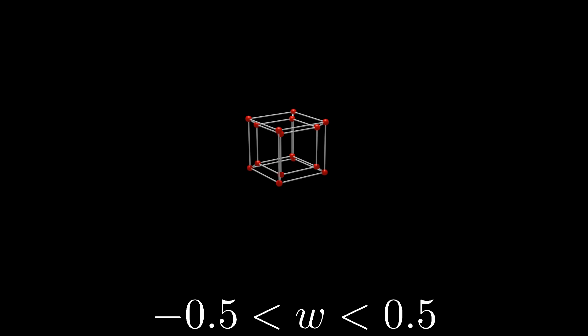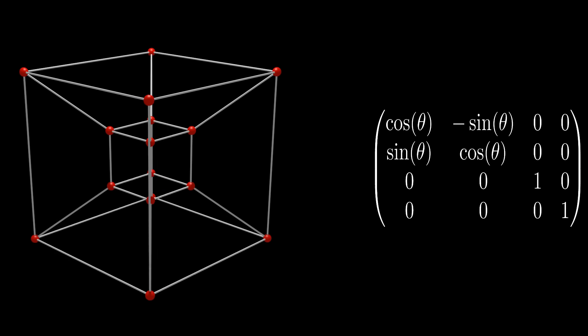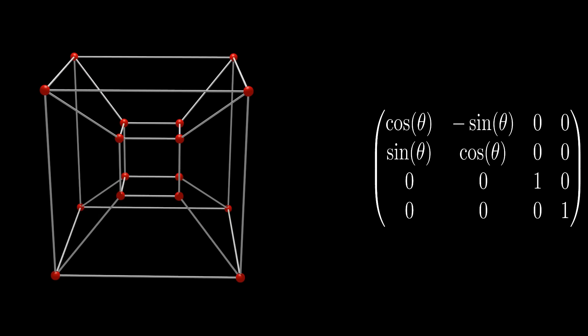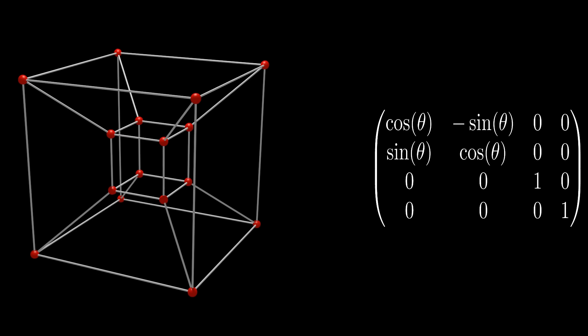So we have a representation of a tesseract, a 4-dimensional cube. Now, let's rotate it. In Cartesian XY coordinates, we can rotate a system with a simple rotation matrix.